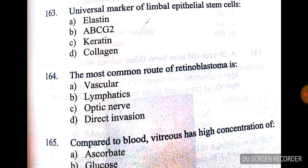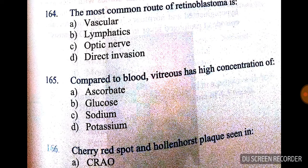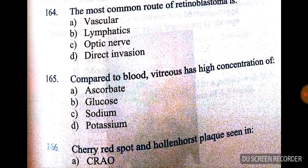Question number 163: universal marker of limbal epithelial stem cells — the answer is B — ABCG2. Question number 164: the most common route of spread of retinoblastoma — option C is correct — it is via the optic nerve.